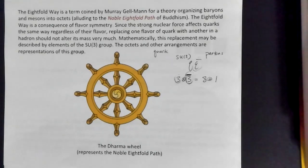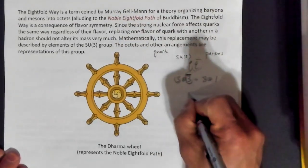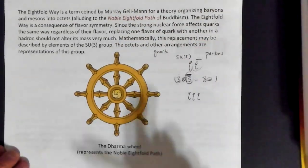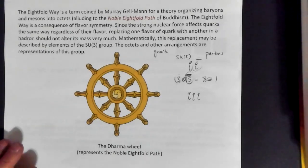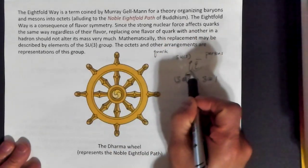One of the things they noticed was that mesons as well as the baryons — remember, baryons are the ones made of three quarks at the simplest level — in both cases they were seeing patterns in that you would see groups of eight.